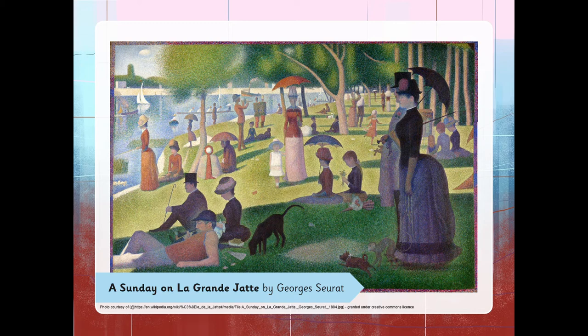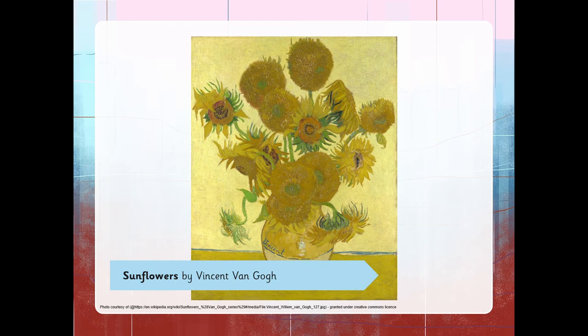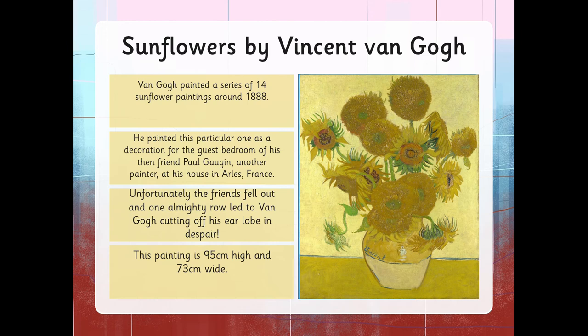I'm sure you all know what this one is. It's the Sunflowers by Vincent van Gogh. Van Gogh painted a series of 14 sunflower paintings around 1888, all of them in different colours, but of course the sunflowers were always yellow. He painted this particular one as a decoration for the guest bedroom of his then friend Paul Gauguin, another painter, at his house in Arles, France. Unfortunately the friends fell out and one almighty row led to van Gogh cutting off his earlobe in despair.